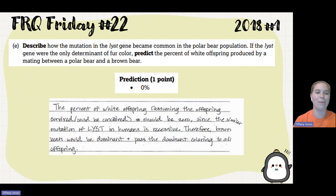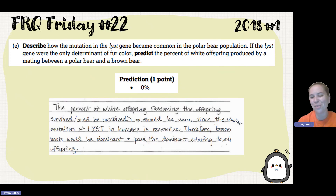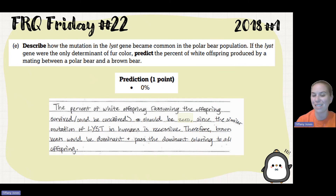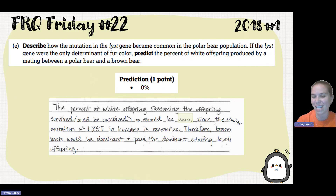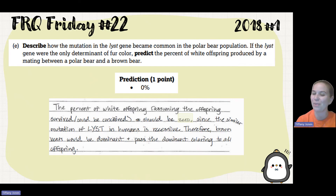For the second part of the last question, if we mate a polar bear and a brown bear, the polar bear carries the recessive white-fur allele and the brown bear carries the dominant allele. The dominant brown bear allele will mask the recessive allele from the polar bear, so 0% of offspring will be white. The student answer confirms this: assuming the offspring could be conceived, the percent of white offspring should be zero, because the mutation in humans is recessive and brown bears would be dominant, passing dominant coloring to all offspring.